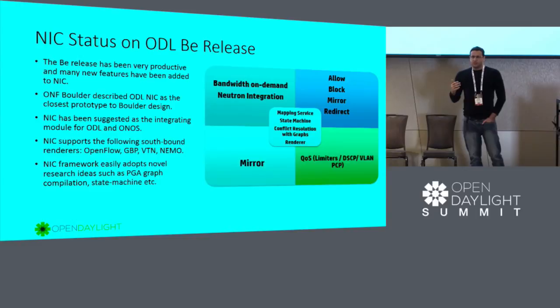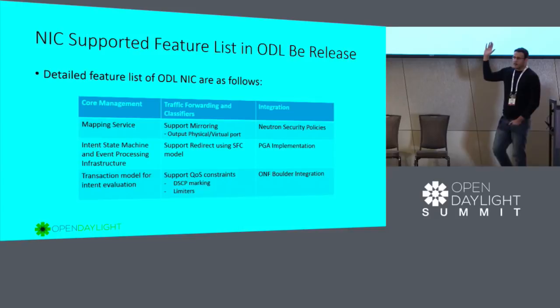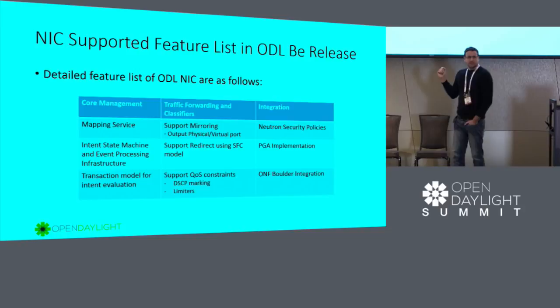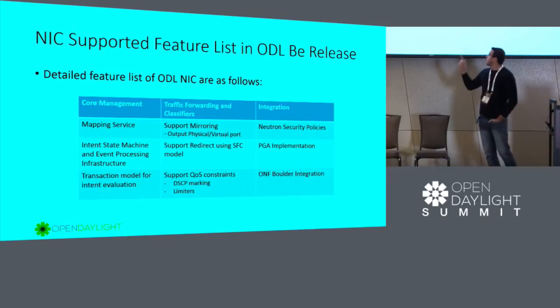Currently, the NIC project has several components. In the core management, we have the mapping service that John will talk about in more detail. We have the intent state machine together with event processing. For the traffic forwarding side, we have support for output physical and virtual ports. All those features have been added on the Beryllium release.